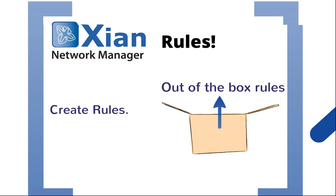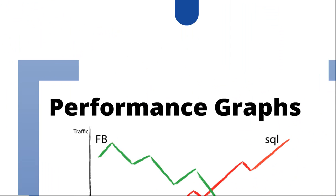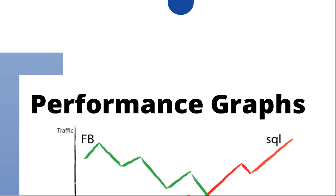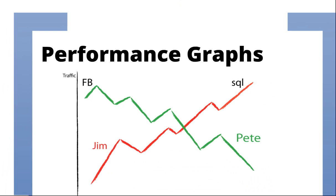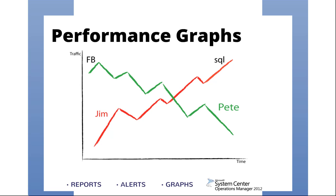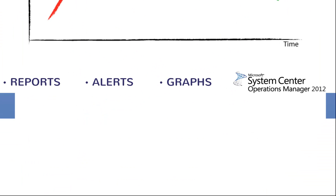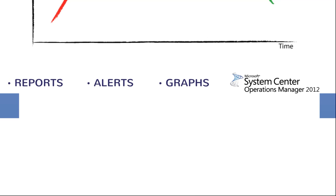Let's take a look at an example of how NetFlow can give you an overview of the performance of your environment. Let's say we want to know how much traffic Jim sends to SQL Server, and at the same time, we want to know how much traffic goes from Peter's machine to Facebook. Sci-on will provide this specific information through reports, alerts, and graphs, directly on your Ops Manager console.